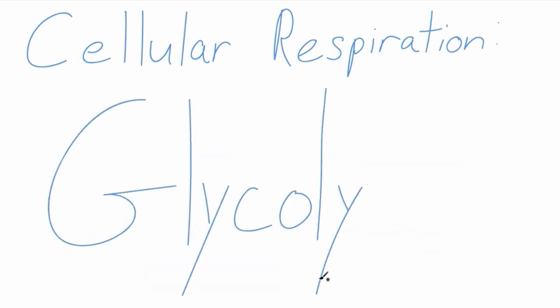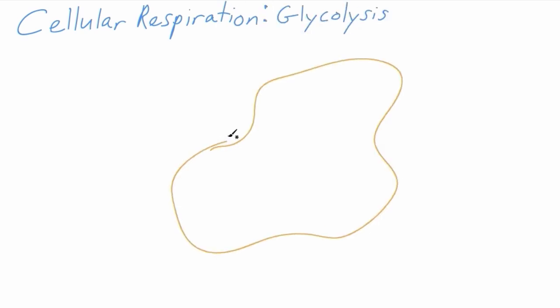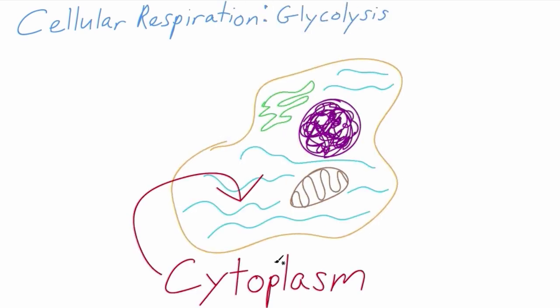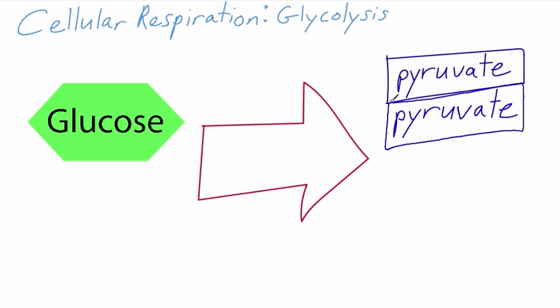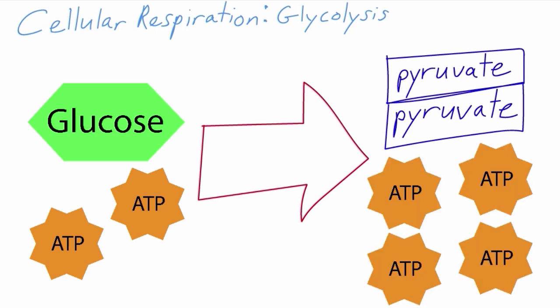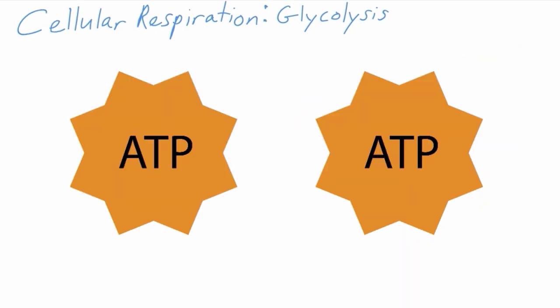The first step in cellular respiration is glycolysis. This step takes place in the cytoplasm of a cell. During this process, the cell takes a molecule of glucose and breaks it down, producing two molecules of pyruvate. The cell needs to use two molecules of ATP to break down the glucose. However, the process of glycolysis also produces four ATP, so this step results in a net gain of two ATP.